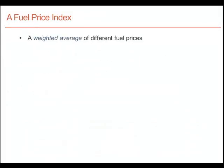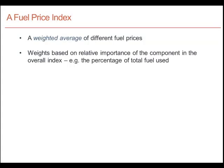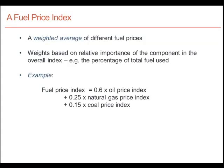Let's take a particular example. Suppose we are interested in computing the price of fuel as an aggregate in the economy, and we imagine that there are three kinds of fuel: oil, gas, and coal. Of course, there are many more, but let's keep things simple. A fuel price index is going to have to be a composite of the behavior of the price index for oil, the price index for gas, and the price index for coal.